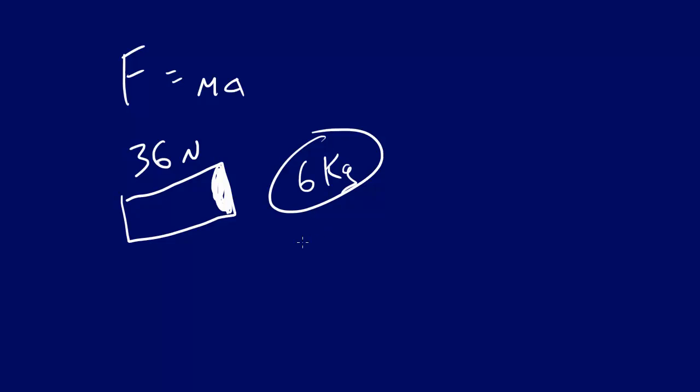It's a pretty powerful potato gun. So what we wanted to figure out is, okay, how fast can we get this six kilogram potato to go with this potato gun that can exert a force of 36 newtons? Well we know we had this formula: force equals mass times acceleration.